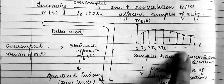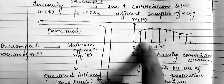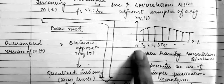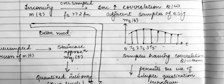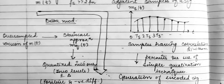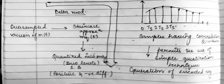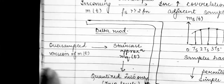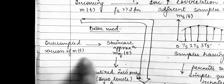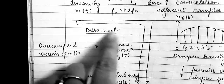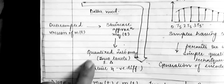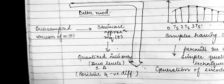We can understand this with the help of an example. We have a discrete signal represented by m(t) with respect to t, which has various instantaneous samples. These samples have correlation between them, which permits the use of a simple quantization technique. For the generation of the encoded signal in Delta Modulation, the over-sampled version of m(t) is used, and it is converted to a staircase approximation denoted by mq(t).